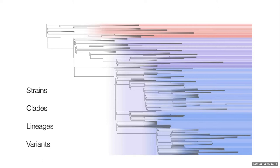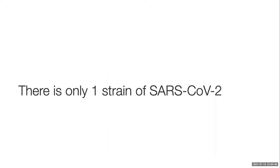To clarify some things about nomenclature surrounding SARS-CoV-2: we have different terms that get used — strains, clades, lineages, and variants. I'll touch on what each of these means. There is only one strain of SARS-CoV-2 as of yet, and different strains of viruses have different biological properties.